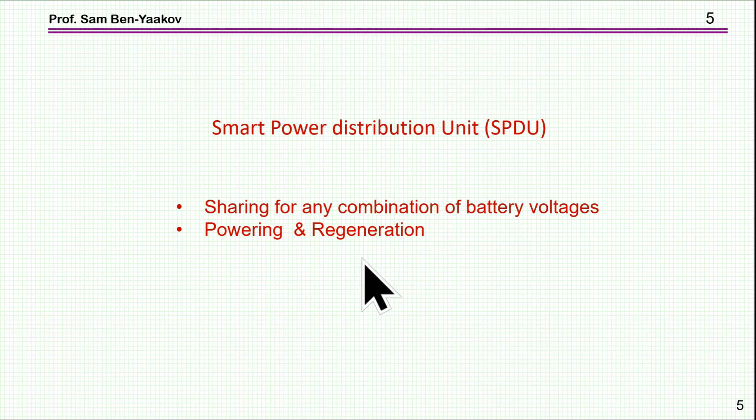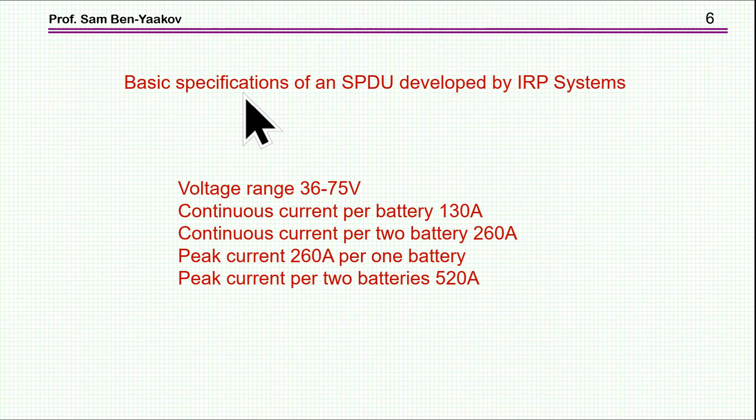So the system has to support both the forward and the regeneration direction of current flow. Now the basic specifications of the SPDU unit developed by IRP Systems are as follows: we have a voltage range of 36 to 75 volts.